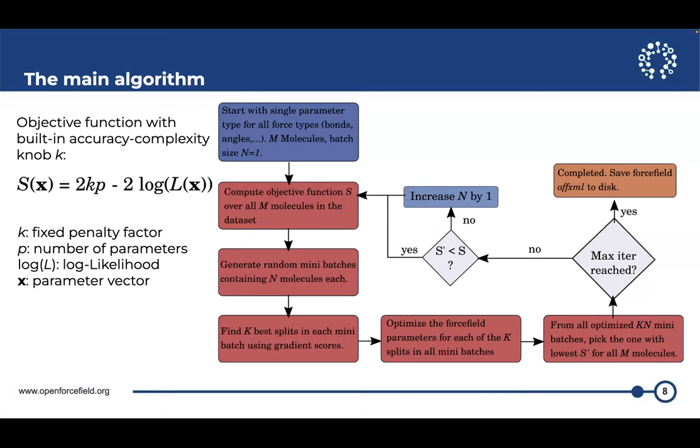And now let's say we start. In the first step we're computing the objective function of all my molecules. Then we generate a set of random mini-batches containing n molecules. So we want to partition our whole universe that we know into smaller universes. And then try to find the K best splits in each of these individual universes using the gradient scores I talked about on this slide before.